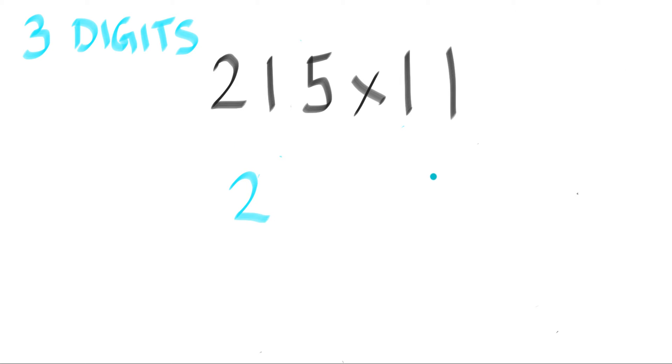First digit 2, then 1, then 5. The technique is when you multiply three digits to 11, you're supposed to get four digits as answer.